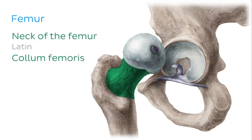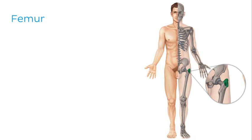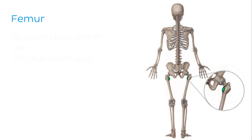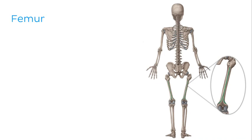The neck of the femur supports the head of the femur. On the lateral aspect, below the neck, is a palpable prominence known as the greater trochanter, which is connected to another eminence on the posterior aspect known as the lesser trochanter by an obliquely running line called the intertrochanteric crest. Moving further down, there is a distinctive ridge running along the posterior aspect of the femur called the linea aspera femoris, which is an important site for muscle attachment.